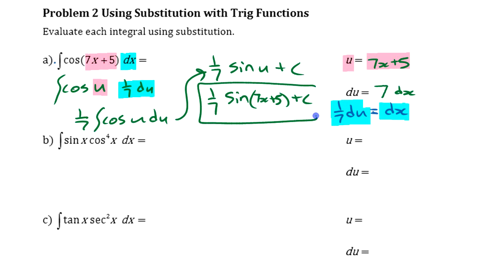You can do that right off the bat if you want, if you see what you're doing. You can just put the 1/7 right in the front to make it simpler. If you're going to evaluate that integral, integral of cosine is sine plus some constant. And of course we have sine, but that's 7x plus 5 plus C. You might check that by doing the derivative of this.